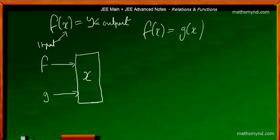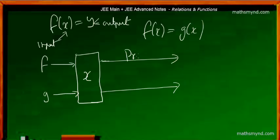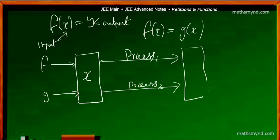The interesting point comes when we deal with the process — the algebraic expression — that is what we do with x. The key part is that process one and process two can be different, yet yield the same output. If the probable inputs are x1 to x-alpha, then the probable outputs should be y1 to y-alpha. The key point is that the process, or what we do with the input value, can be different for each function.